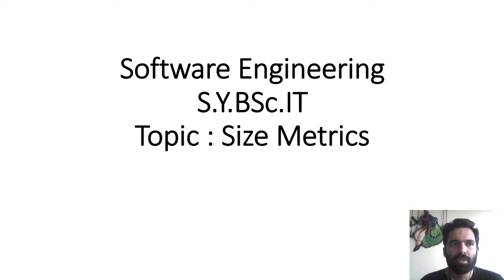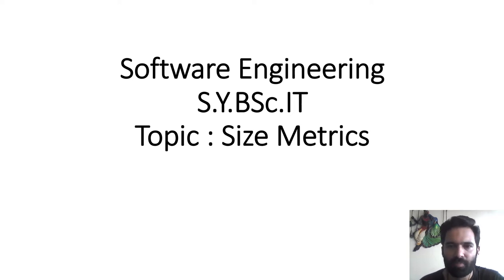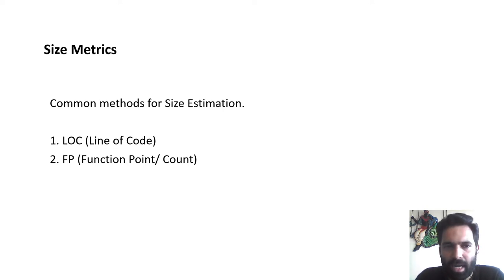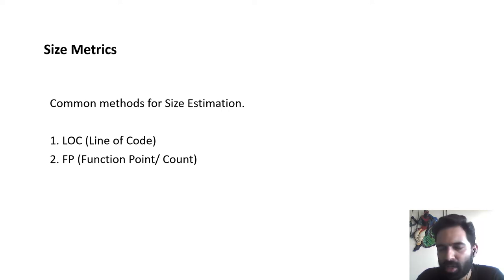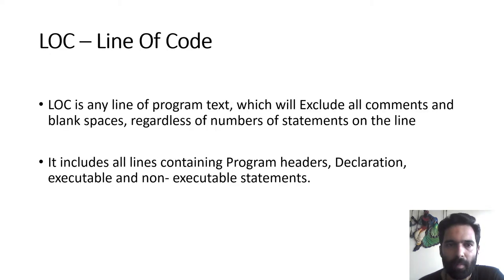Size-oriented metrics is a critical and difficult area of project planning compared to other systems. There are two methods of size-oriented metrics: the first is LOC, also called Line of Code, and the second is FP, that is Functional Point, also called function count.